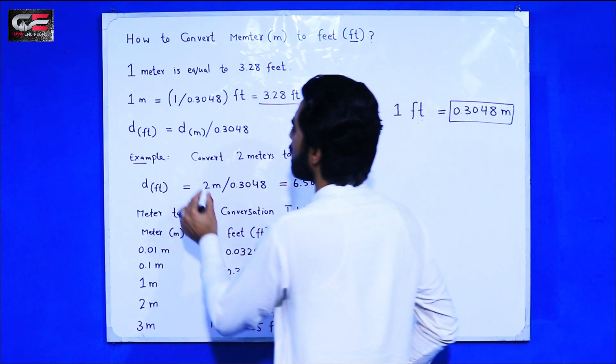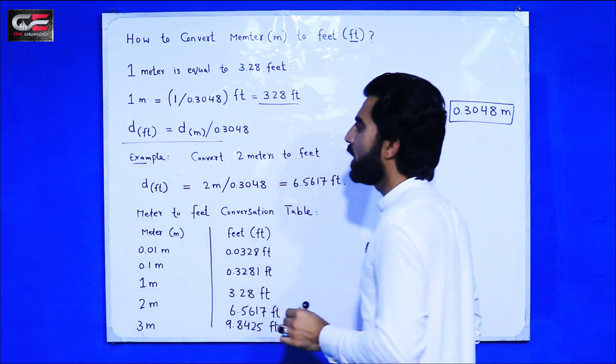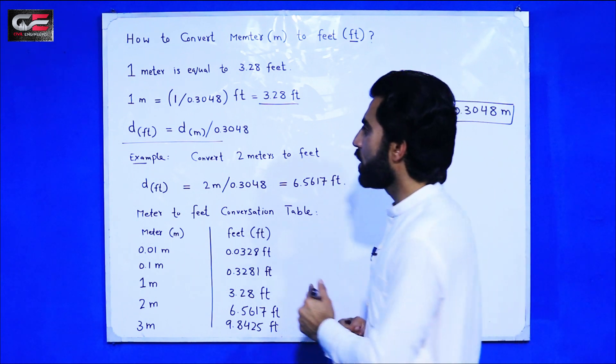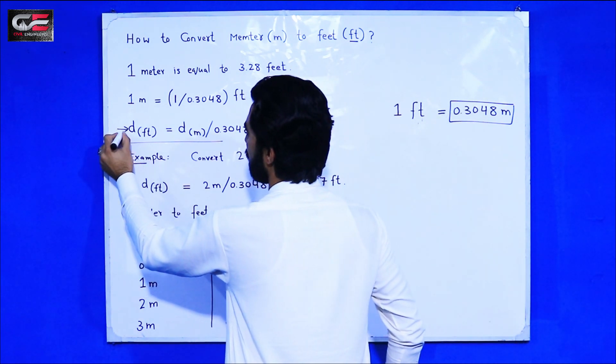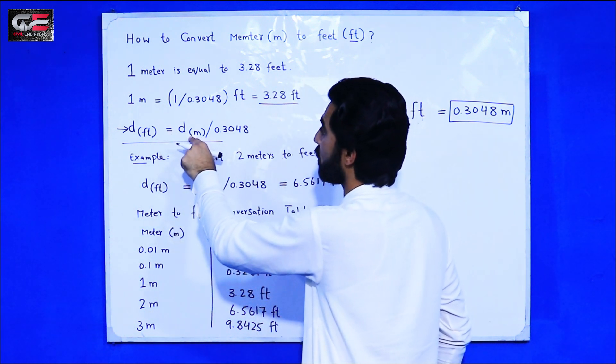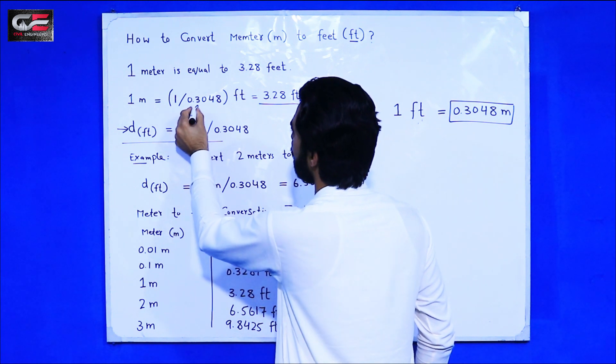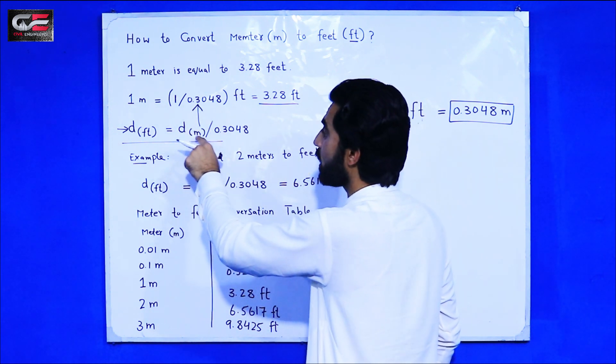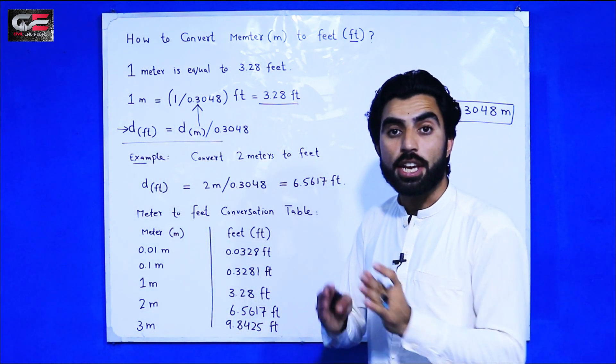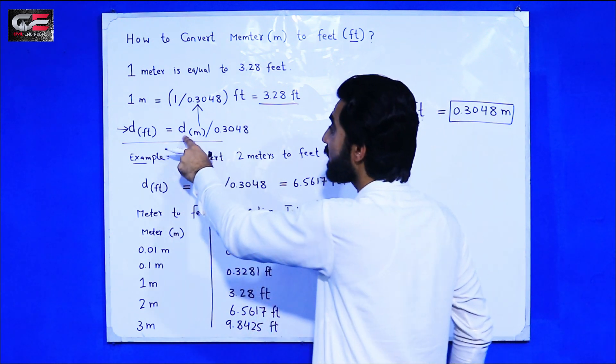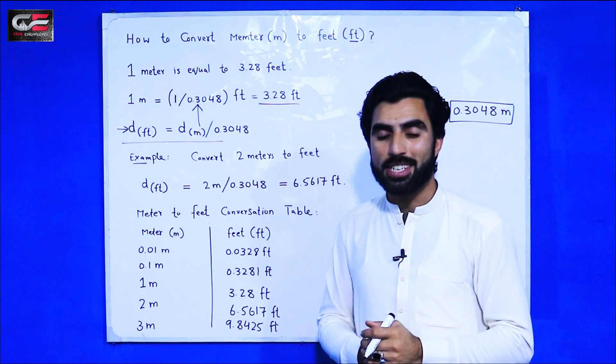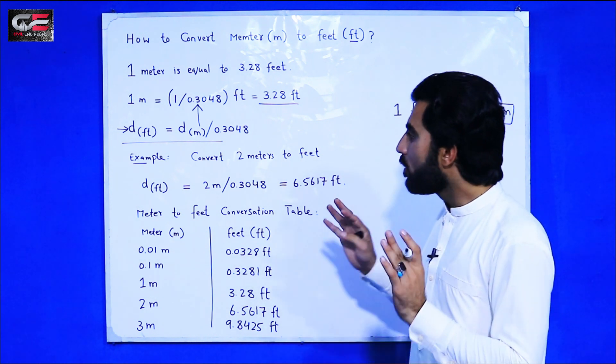This is also a formula to find feet distance in meters. You can see d is here for distance. So distance in feet is equal to distance in meters divided by 0.3048. Then you will get distance in feet from meter.